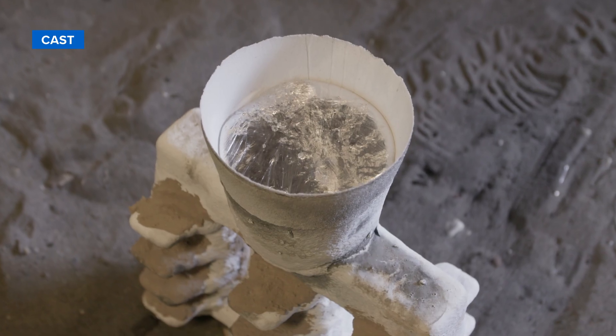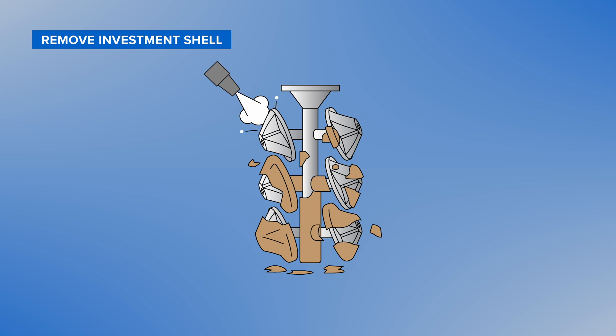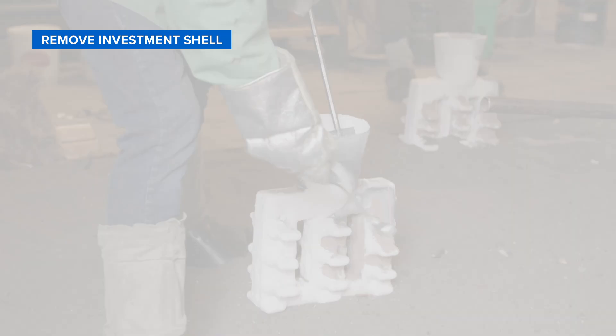When the pour has completed and the metal has solidified, remove the ceramic investment shell to reveal your metal-induced part.